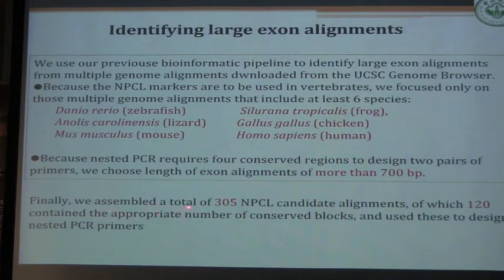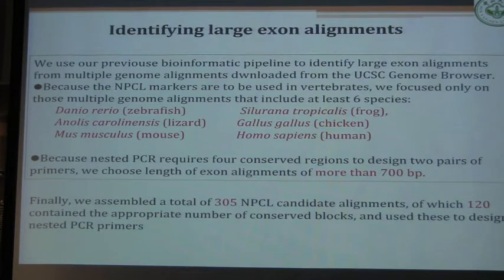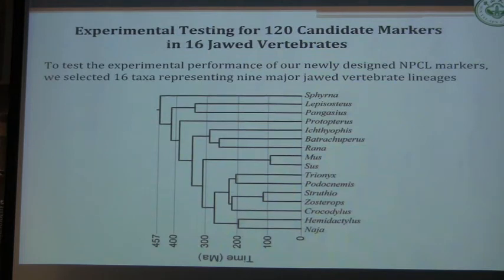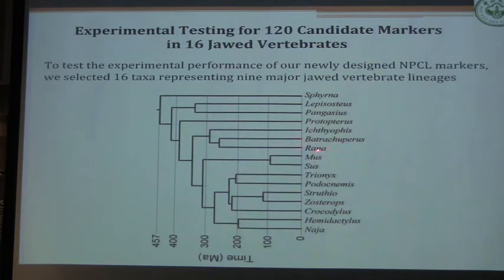Finally we assembled a total of 305 nuclear candidate alignments, of which 120 candidates contained at least four conserved blocks that could be used to design nested PCR primers. We tested those 120 candidates to see whether they work. Because we are going to use this toolkit across jawed vertebrates, we set up a test taxon set including: shark one, shark two, ray-finned fish, lungfish, and three amphibians — caecilian, salamander, and frog — plus two mammals, two turtles, birds, crocodiles, and squamates. All major clades are included in this test taxon set.